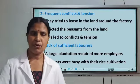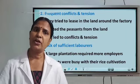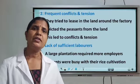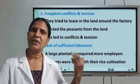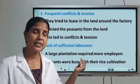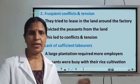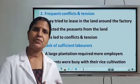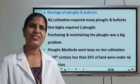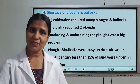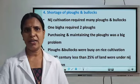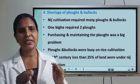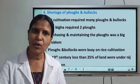The third problem was the shortage of laborers. When indigo cultivation was going on, farmers also wanted to cultivate rice at the same time, so the planters did not get sufficient laborers — the laborers were engaged in rice cultivation as well. Another problem: they faced a shortage of bullocks and plows needed for preparing the soil, as they were also being used in rice cultivation.